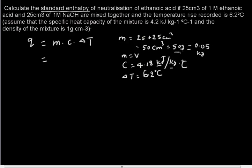The mass and C units should be compatible. Now we can plug in the mass as 0.05 kg and the C value is 4.18 kJ/kg/°C times ΔT, which is 6.2°C.